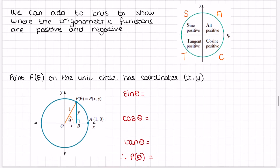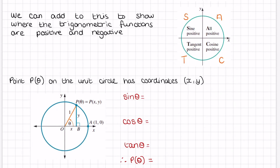If we have a point on the unit circle with coordinates x, y, we can work out what those coordinates are in terms of sine, cos, or tan. Sine of the angle is opposite over hypotenuse, so it would be y over 1, which equals y. Cos would be x over 1, adjacent over hypotenuse, which equals x. Tan is sine over cos, so it would be y over x.